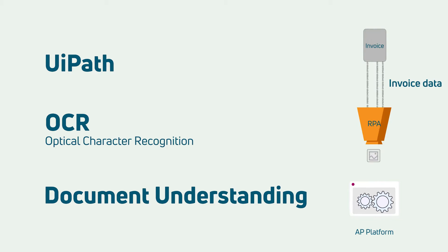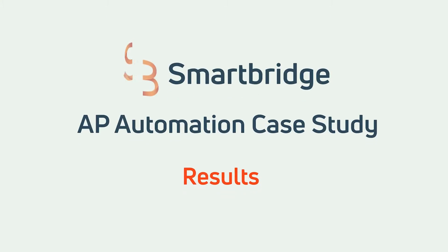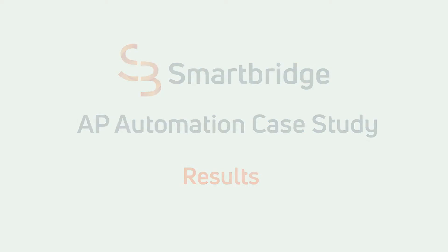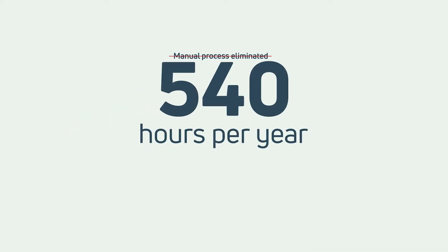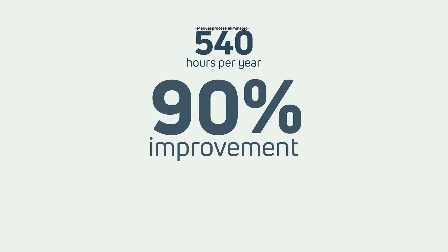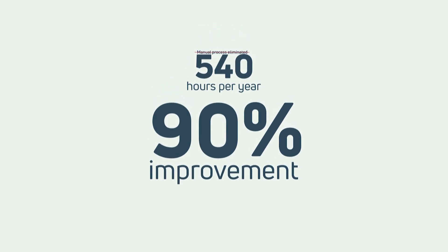The invoices are then pushed into the AP platform for posting and approval. Machines can process much faster, cheaper, and at much higher quality. With RPA, the likelihood of human errors has been greatly diminished. In fact, with the manual process now eliminated, this automation is saving our customer approximately 540 hours per year.